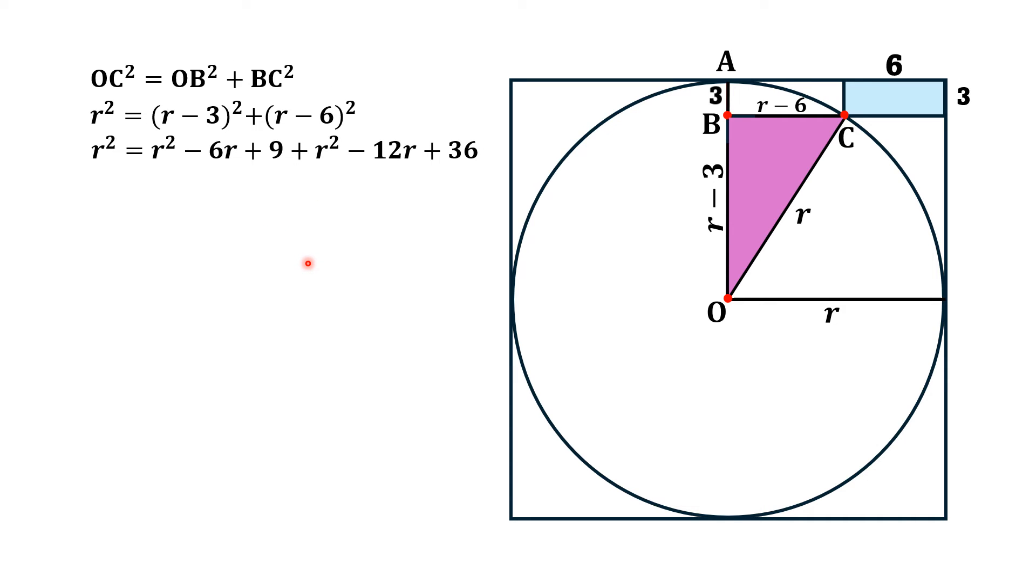Expanding the binomials on the right-hand side, we get r² = r² - 6r + 9 + r² - 12r + 36. One r² on the left cancels with r² on the right. After simplification, we get r² - 18r + 45 = 0.